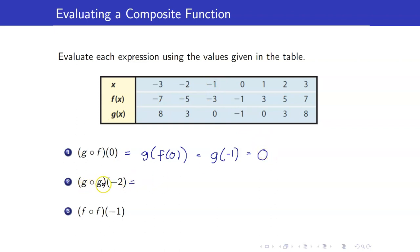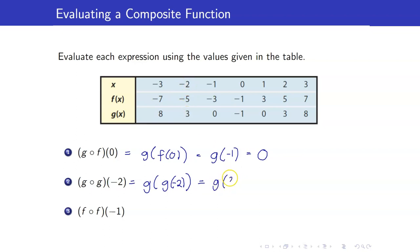Next, we have g circle g of negative 2, that is g of g of negative 2. First, g of negative 2 is equal to 3. And g of 3 — looking at g when x is 3 — that's equal to a.